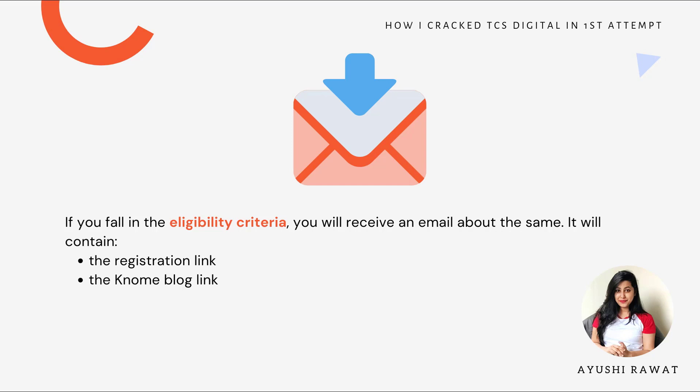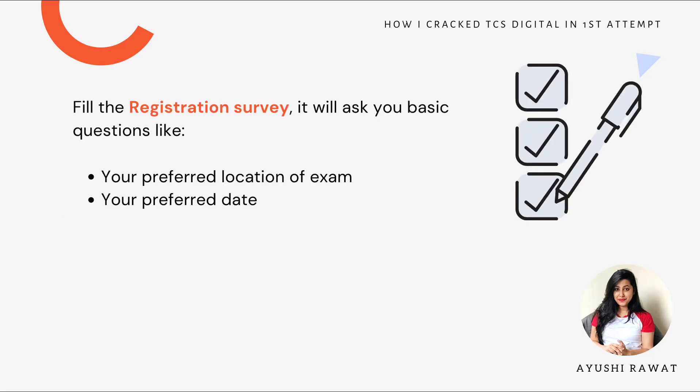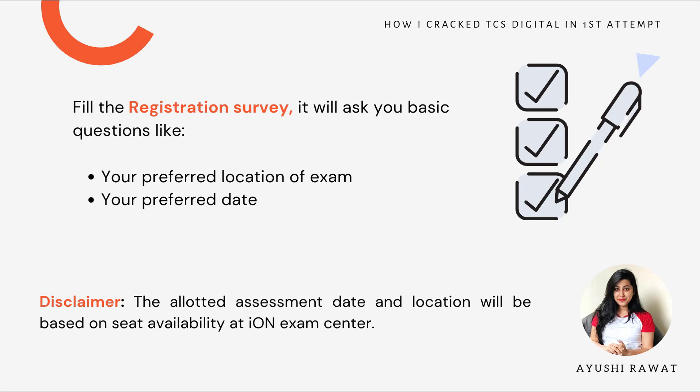The email will contain a registration link and the NOMI blog link. Fill the registration survey — it will ask you some basic questions like your preferred location or preferred date. Take up the survey to enroll for the assessment by sharing the preferred assessment date and location. Note that the allotted assessment date and location will be based on seat availability at the ION exam center.